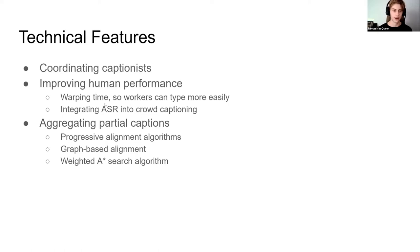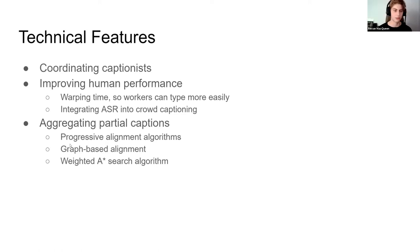They also integrated ASR with word suggestions like an autocomplete system. For aggregating partial captions from different workers, they discussed previous methods — progressive alignment algorithms and graph-based alignment — but ultimately used a weighted A-star search algorithm, which the group honestly didn't fully understand because the paper didn't provide many technical details on the implementation.